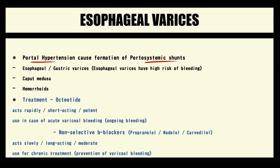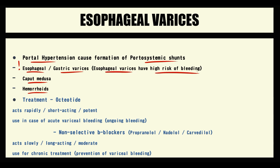The portosystemic shunts include esophageal and gastric varices, caput medusae, and hemorrhoids. Among these three types, esophageal varices are the most dangerous, because their rupture can cause severe bleeding. The probability of variceal rupture depends on severity of portal hypertension — the higher the pressure inside the portal vein, the higher the chance of variceal rupture, and the more severe the blood loss.